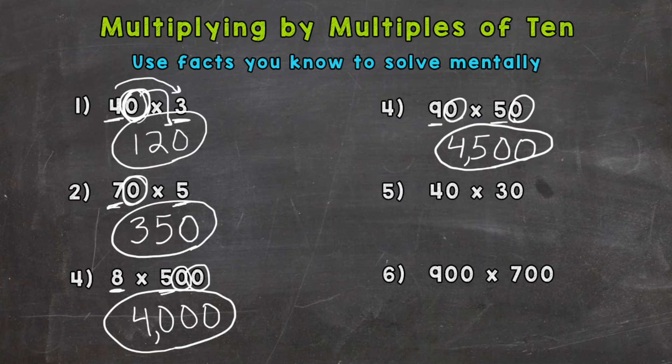Number 5, we have 40 times 30. Let's pick out our fact here: we have 4 times 3, which is 12. And then we have 1, 2 zeros that we can place back in our answer to give us the correct product. The product just means the answer to a multiplication problem, so 1200.